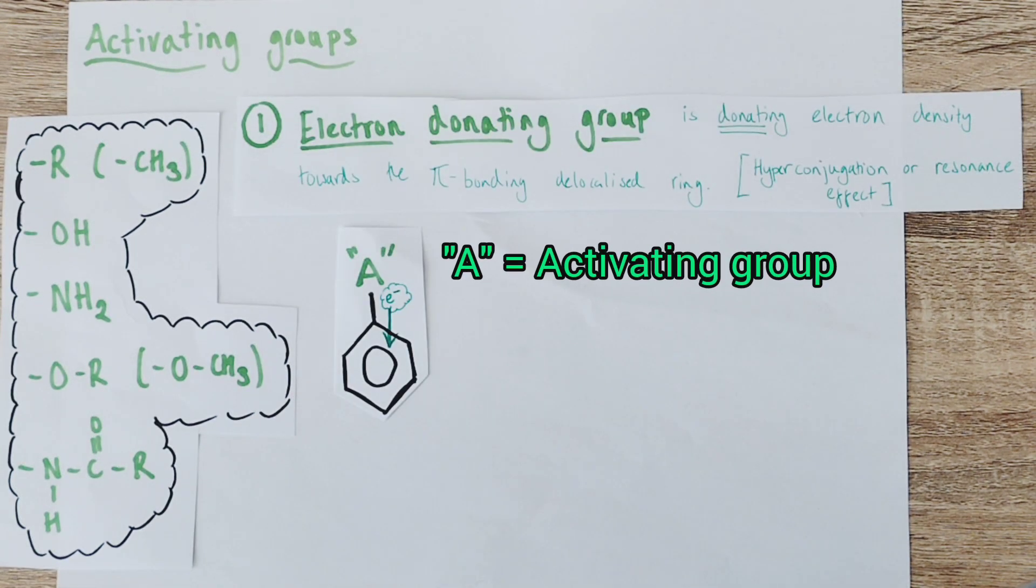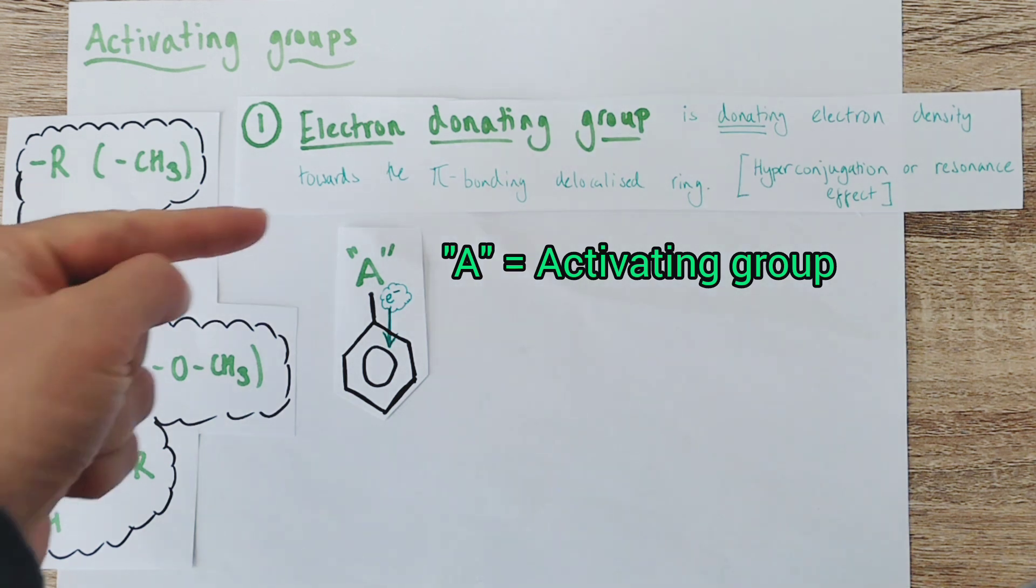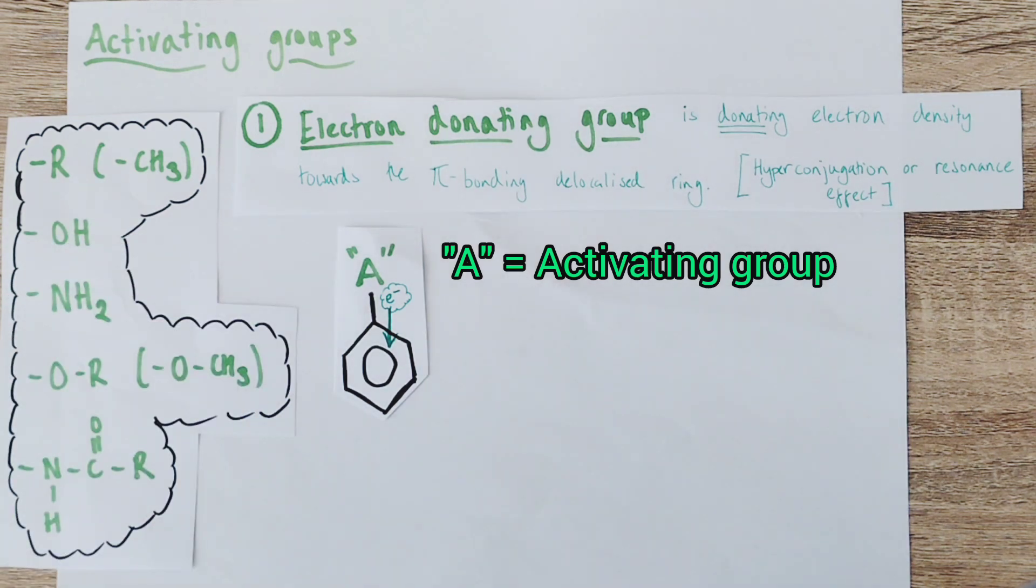Just how do these activating groups influence benzene rings to increase their activity with electrophiles in electrophilic substitution reactions? Well, in one way or another, these activating groups will be electron-donating groups. They'll be donating electron density towards the pi-bonding delocalized ring system itself. That could be via some form of hyperconjugation, such as with the alkyl group, the methyl group shown here.